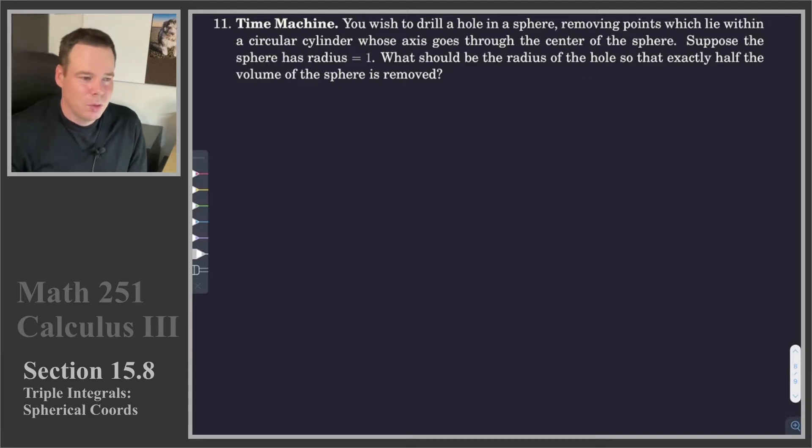Now we take our time machine back to a problem we've seen in Calculus 2, but also at the beginning of this course, one of our motivating problems. We wish to drill a hole in a sphere, and we want to do this in such a way that we remove exactly half of the volume of the sphere. So how do we do this? How big should this hole be that we drill?